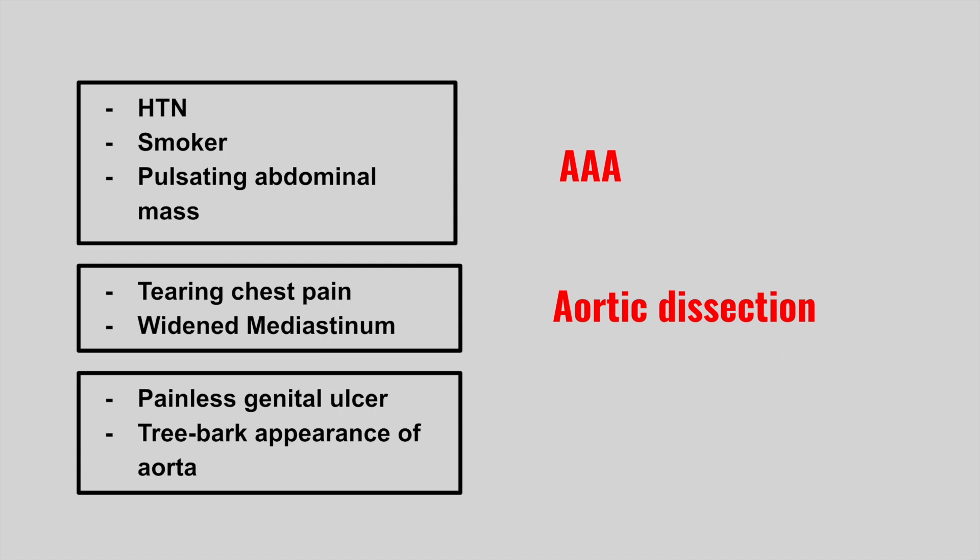The next one is someone with a history of painless genital ulcers who now has a tree bark appearance of the aorta. This is a thoracic aortic aneurysm, associated with syphilis leading to endarteritis of the vasa vasorum.